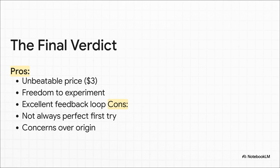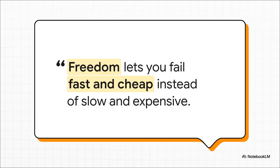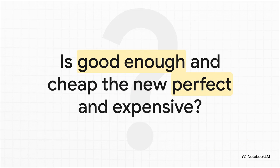Here's the final breakdown. The pros are huge: the price is just unbeatable, which gives you incredible freedom to experiment, and that feedback loop is fantastic. On the cons side, it might take a couple of tries to get something perfect, and for some folks, the company's origin is going to be a sticking point. That $3 price isn't just about saving a few bucks — it's about freedom. The freedom to try new things, to build more stuff, and to fail fast and cheap. Because that's where real innovation actually comes from. So I'll leave you with this question: in this fast-moving world of AI, are we starting to shift away from chasing some impossible, expensive version of perfect? Could the future actually be built on tools that are affordable, flexible, and just good enough to get the job done?